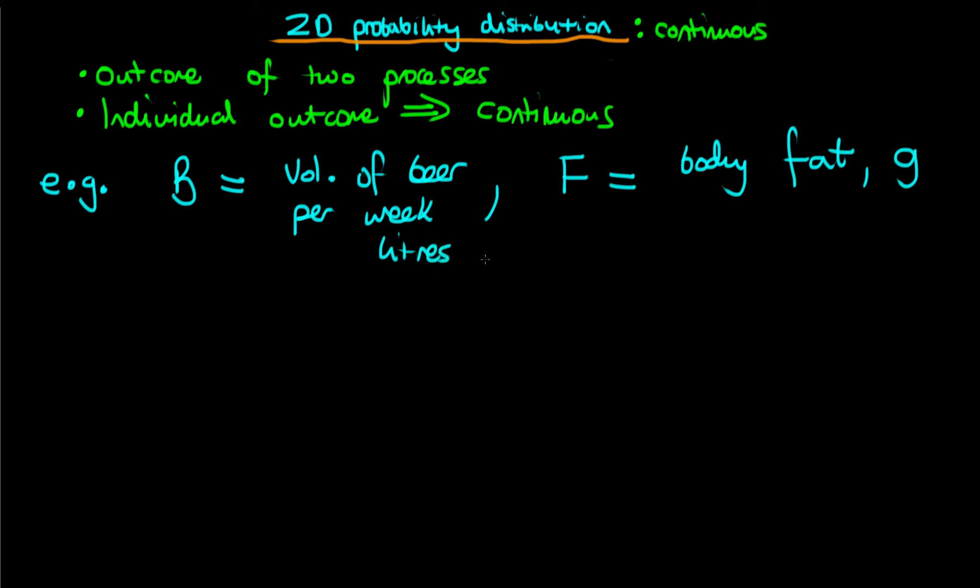So why are we using probability distributions to describe the outcomes of these two processes? The idea is that we are sampling an individual at random from the population. Before we actually measure their level of body fat or their level of alcohol that they drink per week, we are uncertain about both of those outcomes, and hence because of this uncertainty, we use probability distributions.